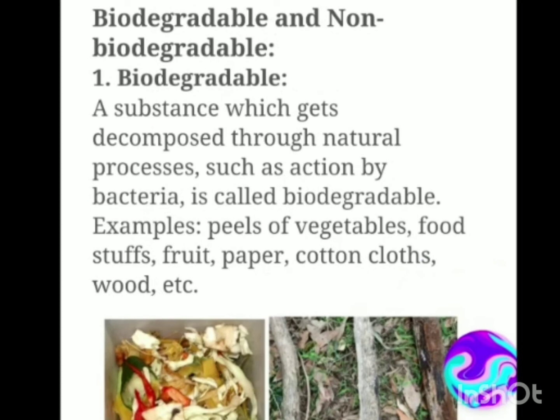Now comes biodegradable and non-biodegradable substances. A substance which gets decomposed through a natural process — such as action by bacteria — is called biodegradable. Whenever something gets rotten by the attack of microorganisms and goes back to the soil or back to nature, it is said to be biodegradable. Examples include peels of vegetables, foodstuffs, fruit, paper, cotton cloths, wood, etc.